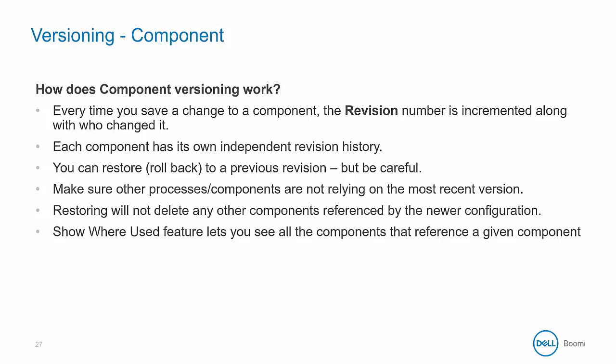If you need to restore or roll back to a previous revision, you can do so by selecting a previous revision. Simply make sure other processes or components are not relying on that most recent version, and keep in mind that restoring a revision does not delete any other component. When rolling back, it may be useful to use the 'Show Where Used' feature within Component Explorer to better understand where the component is being referenced before restoring a revision.